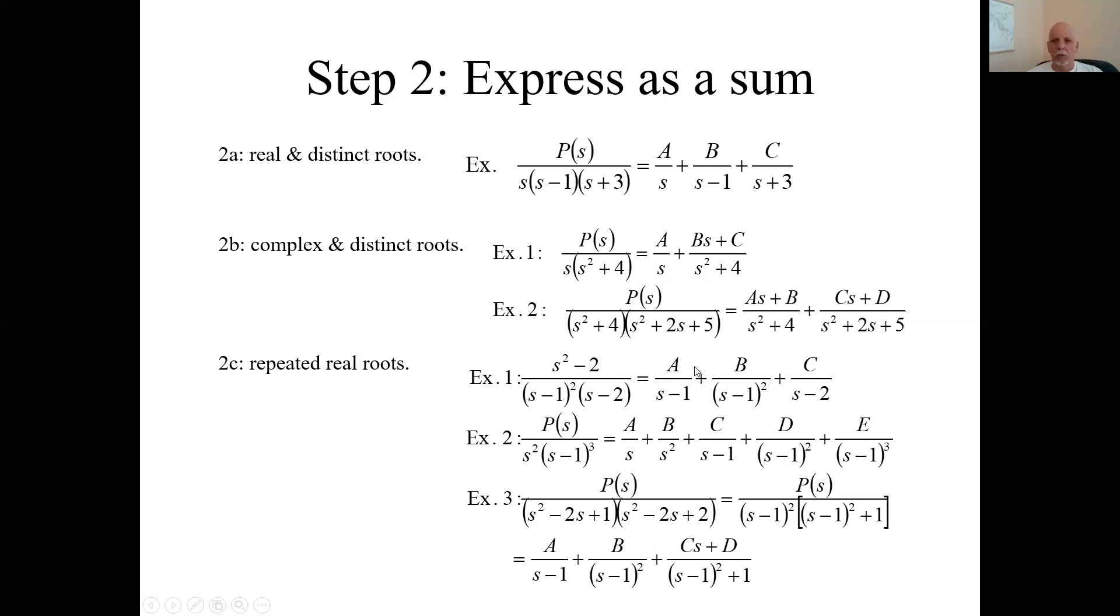Since they're all real roots, what goes in the numerator are just constants, even though this is a quadratic denominator. Because it's a real root, ultimately a real root, put a constant up there. This guy is twice, s and s squared. This guy is up to cubed, so you'll have s minus one, s minus one squared, s minus one cubed. Again, all real roots, so all constants in the numerators.